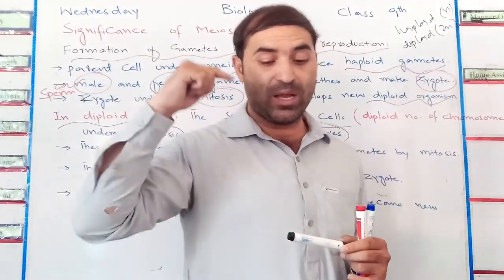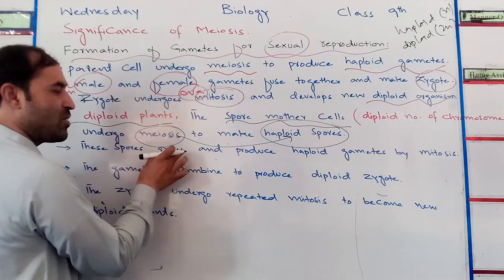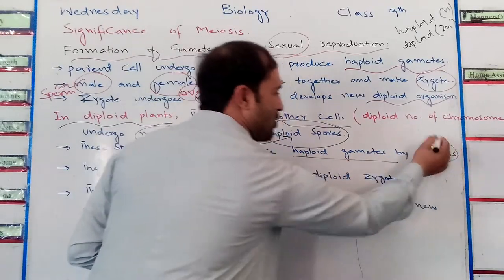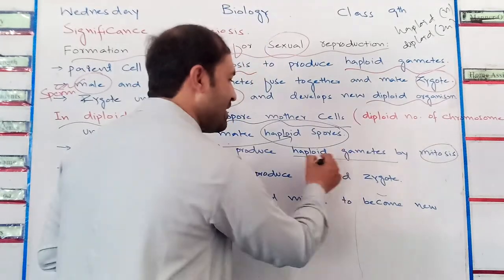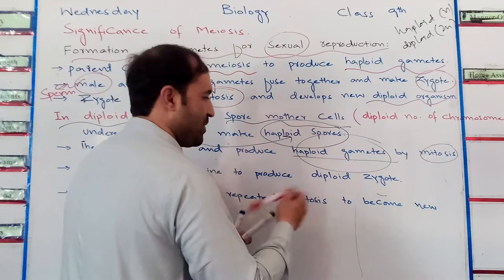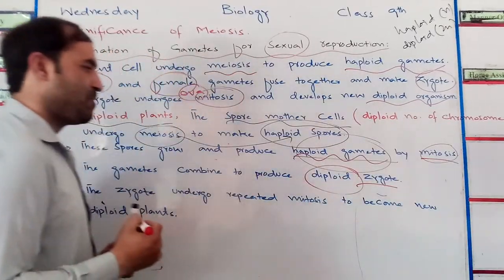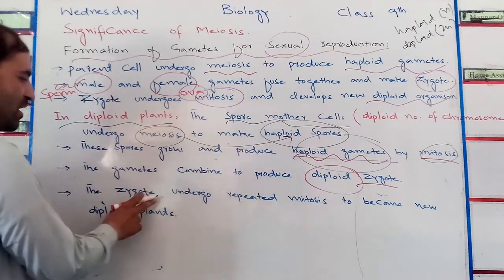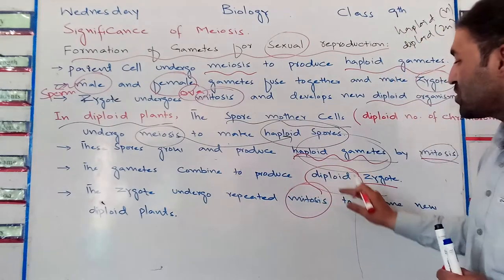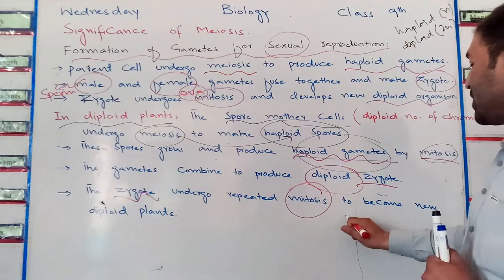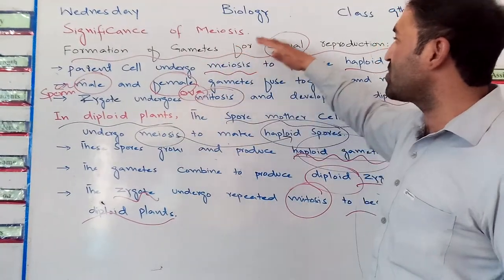These haploid spores grow into haploid structures, and those haploid structures then produce haploid gametes by mitosis. After the formation of haploid gametes, the gametes combine to produce a diploid zygote. This zygote then undergoes mitosis many times and ultimately produces a diploid plant — a new organism in the case of diploid plants.